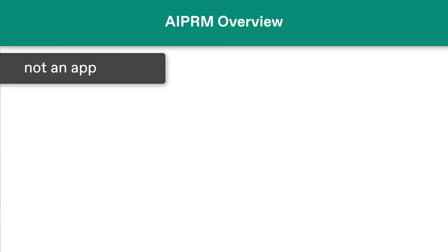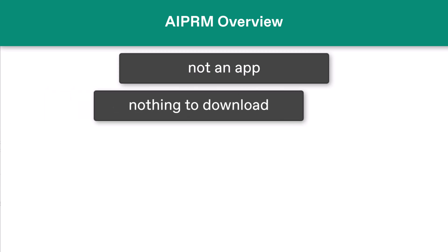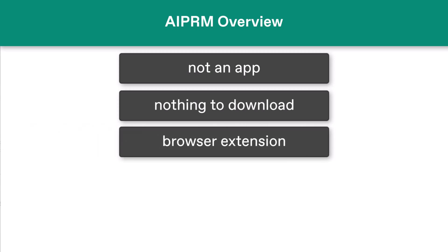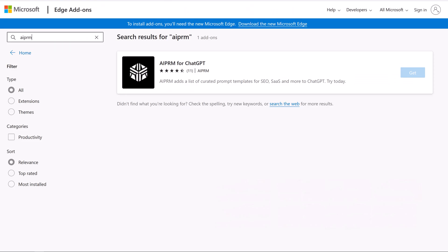It's important to understand that AIPRM is not an app in the traditional sense. There's nothing to download. Instead, it's an extension that you add to a browser. We have an extension for Chrome and Edge.